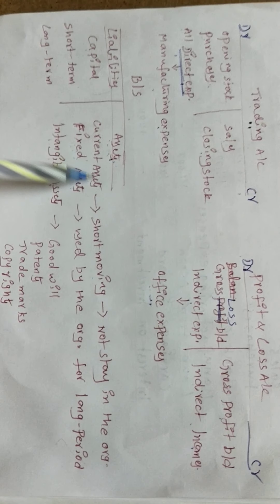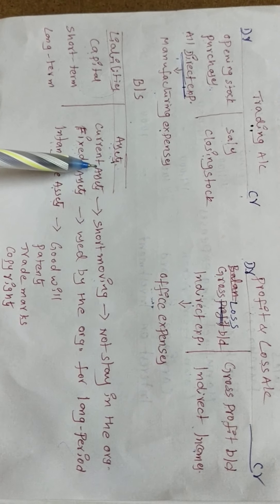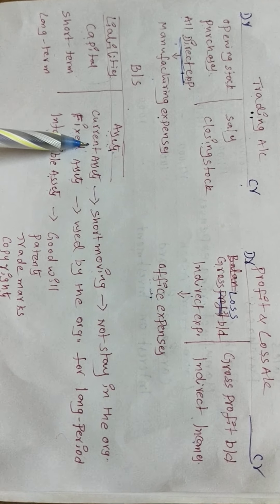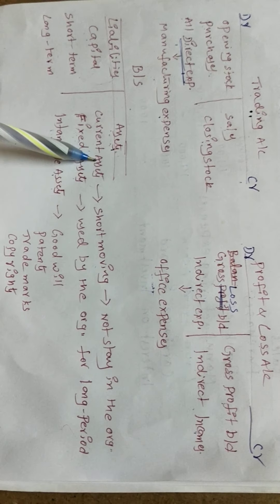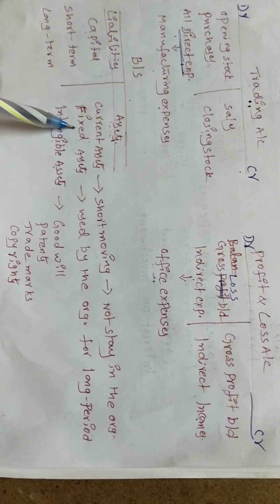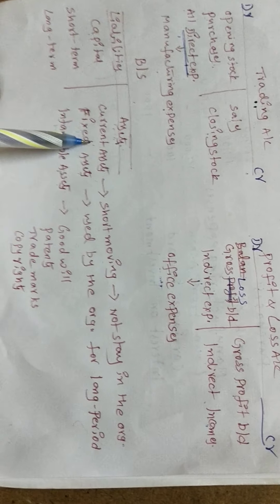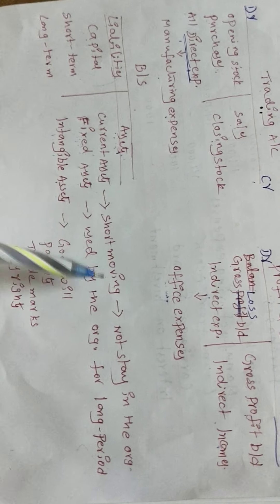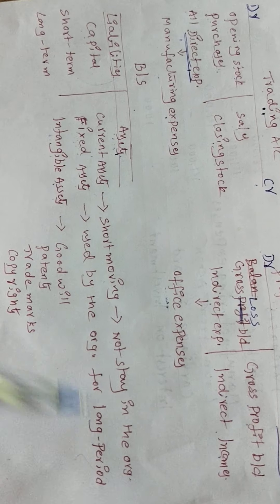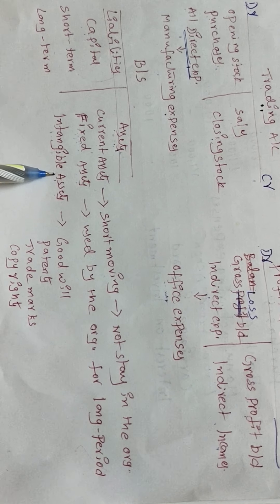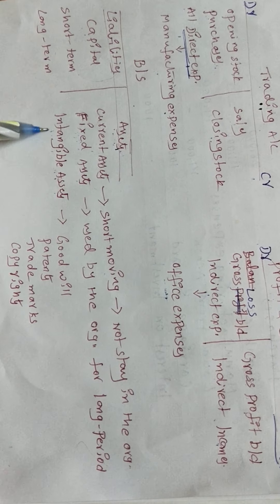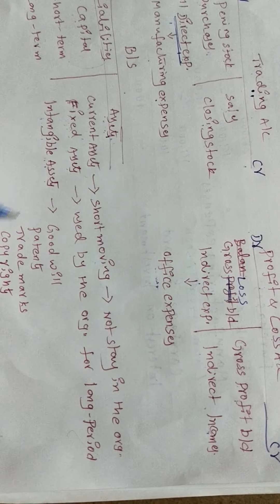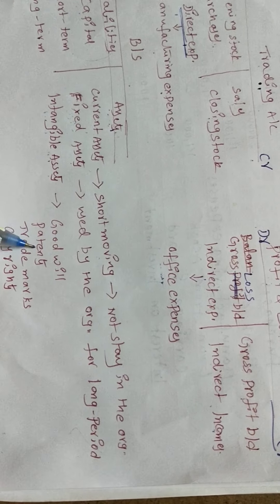Current assets are short-moving assets — they cannot stay in the organization for a long period. Intangible assets are those we cannot see and touch, but they are very important to get success, so they are also considered as assets.